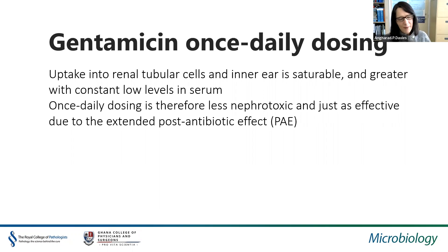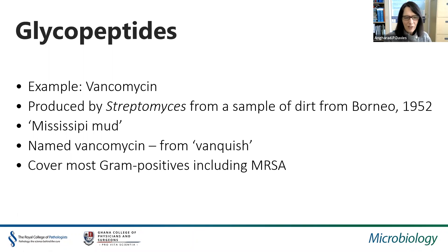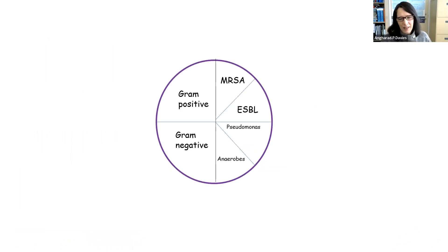The glycopeptides — the main example being vancomycin, another being teicoplanin — are parenterally administered. The only oral indication for vancomycin is treating C. difficile disease in the bowel, where it isn't absorbed; for all other indications it must be given intravenously, as must gentamicin. Vancomycin is named for its ability to 'vanquish' most gram-positive organisms including MRSA, making it very useful for serious MRSA infections.